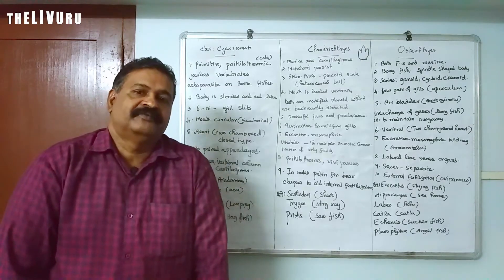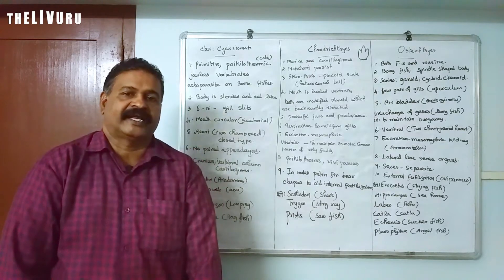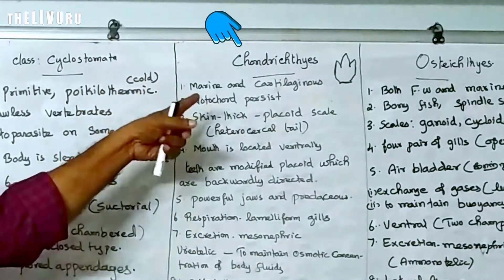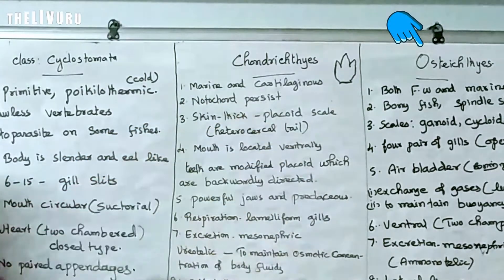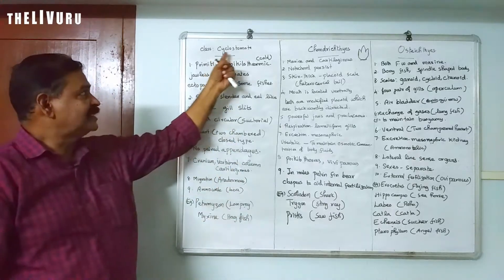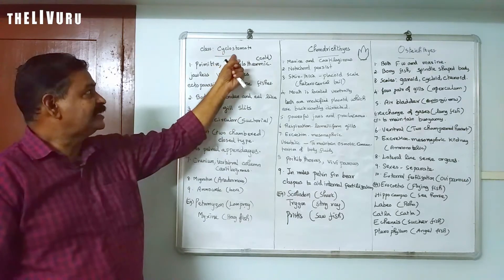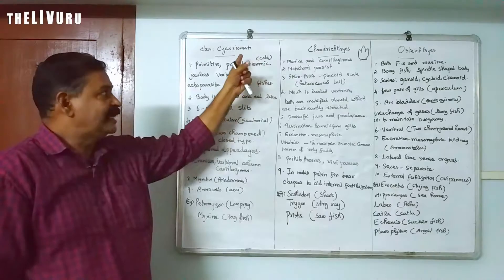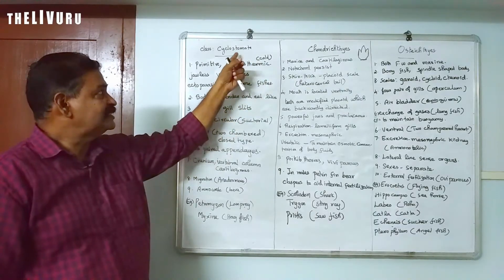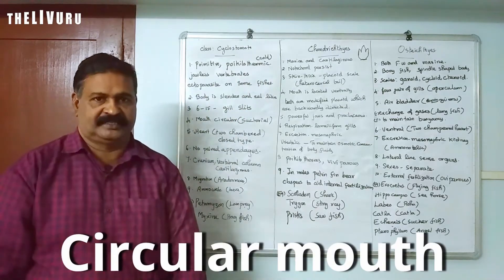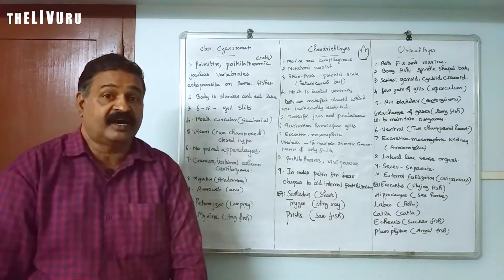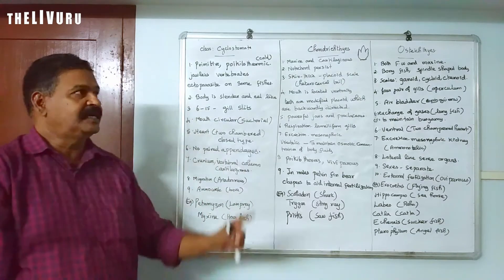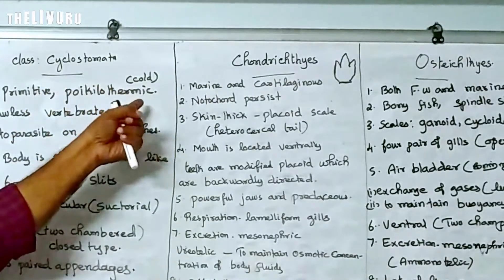In this video, we are going to see the general characters of class Cyclostomata, Chondrichthyes, and Osteichthyes. Cyclostomata: 'cyclo' means round or circular, 'stomata' means mouth — that is, animals which possess a circular mouth. These are otherwise called Cyclostomata.